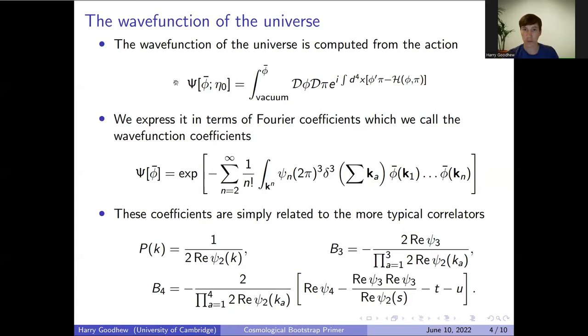We express it instead in terms of Fourier coefficients which we call the wave function of the universe coefficients. These are these ψ_n in this expansion, and they are simply related to the more typical correlators through these relationships. You see that they all depend on the real part of these correlators, and this is the reason why we choose to focus on the wave function coefficients rather than the correlators.